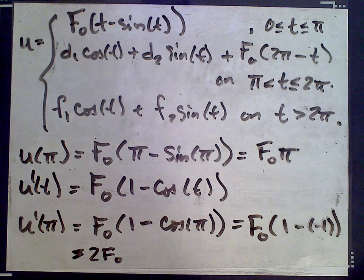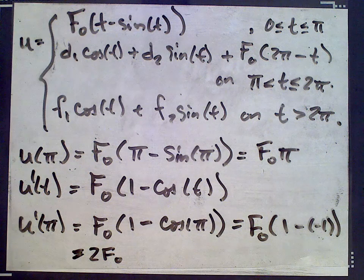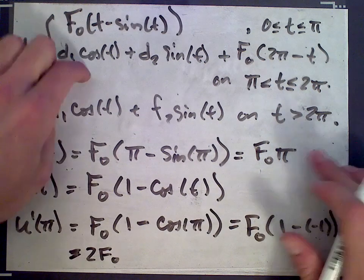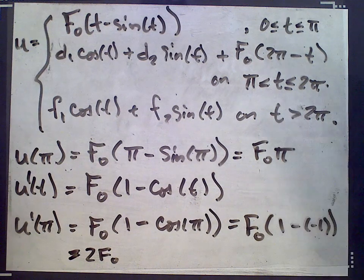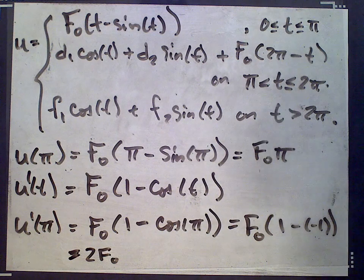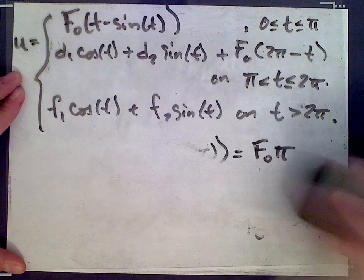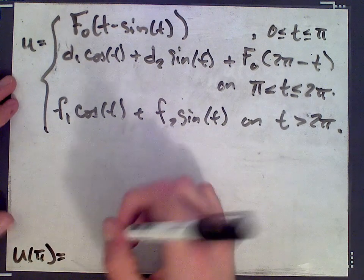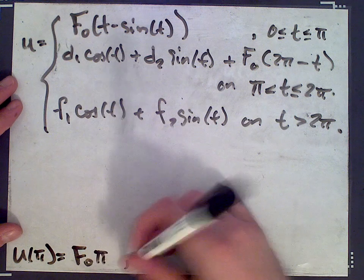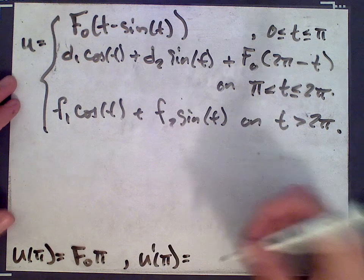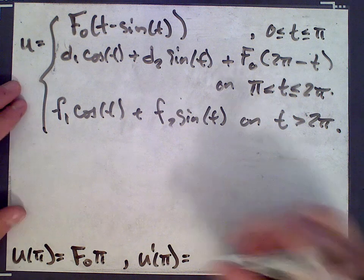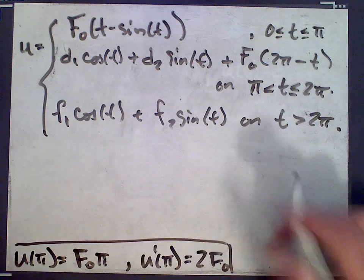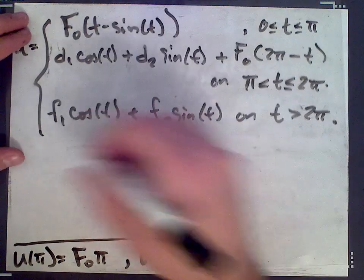Okay, so let's see what we have next. Well, we want to solve for... these are essentially serving as our initial conditions now for solving for the constants d1 and d2. u(π) is f0 π, and u'(π) is 2f0. So let me write these at the bottom here. Okay, so we have u(π) is π times f0, f0 π, and u'(π) is 2f0. And we're going to use these to solve for d1 and d2. These are the initial conditions for this second formula.